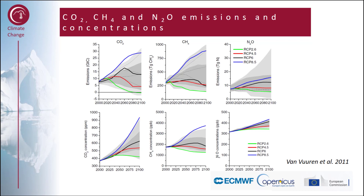On the bottom left you can see the future CO2 concentrations under the different RCPs. The blue line shows RCP 8.5, and CO2 concentrations will in the future be more than 900 parts per million under this scenario.